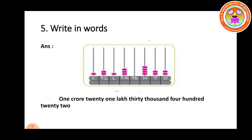From the left side we can take 1 crore. Lakhs taken together: 2 and 1 becomes 21, so 21 lakhs. Thousands and 10,000 taken together: 3 then 0, so 30,400. Tens and ones taken together: 2 and 2, so 22. We got the number 1 crore, 21 lakhs, 30,422.